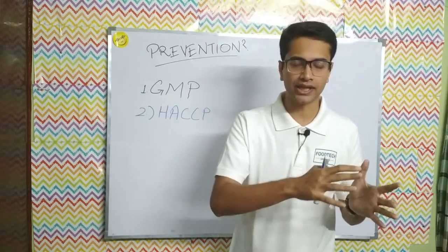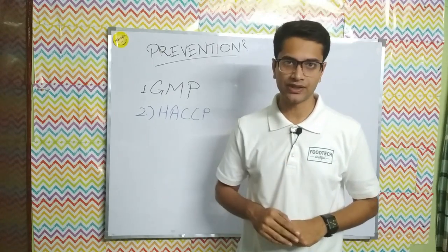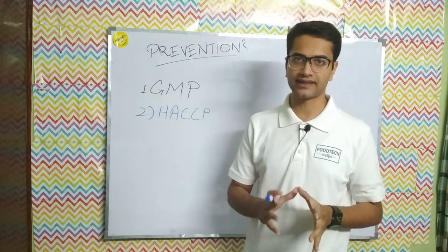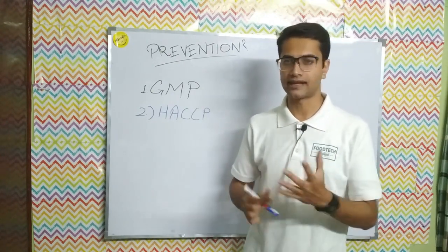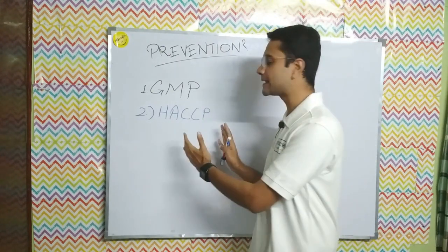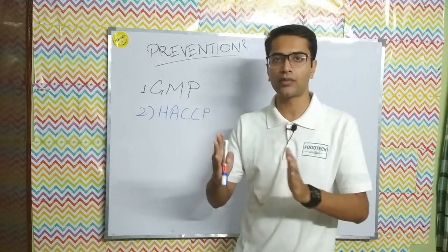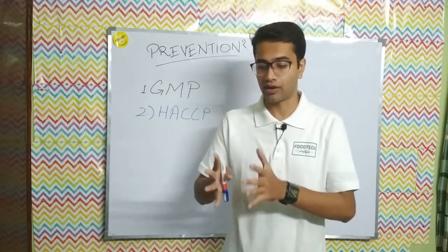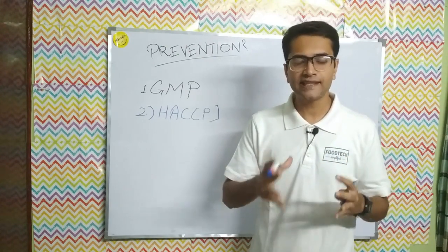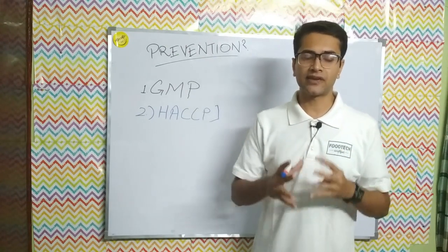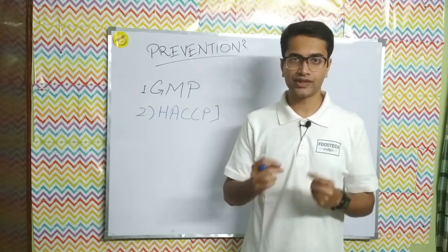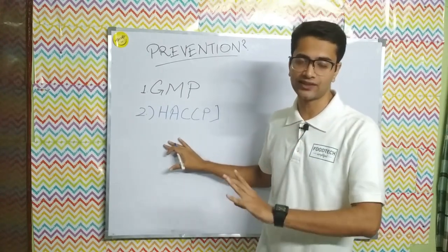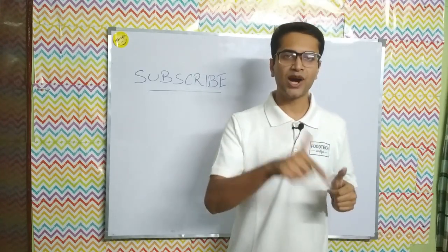The second approach to preventing physical hazards is the HACCP principle — Hazard Analysis Critical Control Points. HACCP involves careful monitoring of each and every step in the processing or production process. It is a very important concept, so a separate dedicated video on HACCP will be made.